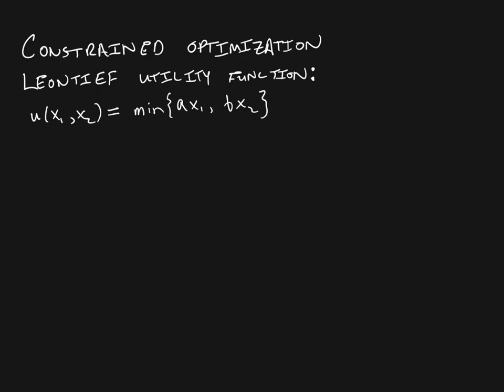Just because you see a utility function like this doesn't mean that the goods have to be complements. But in general, if goods are complements, then this is likely to be the utility function that you would see. This utility function says that our utility from consuming some amount X1 of good one and some amount X2 of good two is going to be the minimum of AX1 and BX2.